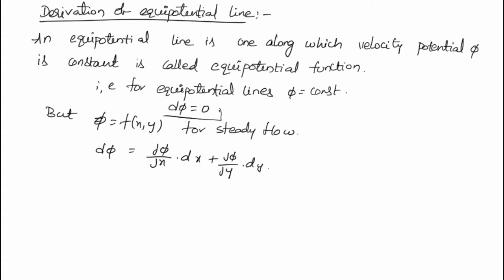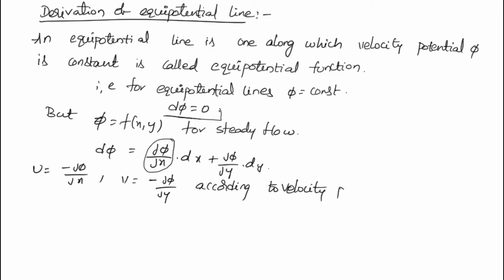We know that ∂phi/∂x = -u and ∂phi/∂y = -v according to the velocity potential function, as seen in the previous video. Therefore, d phi = -u dx - v dy.